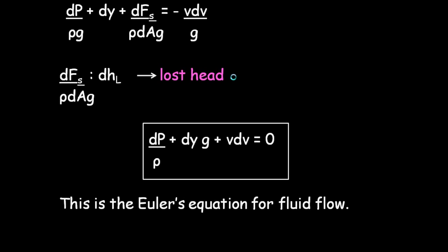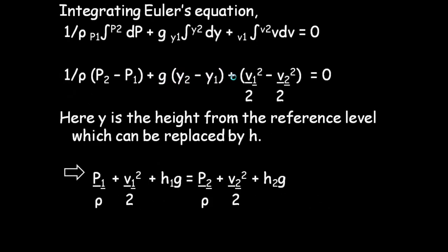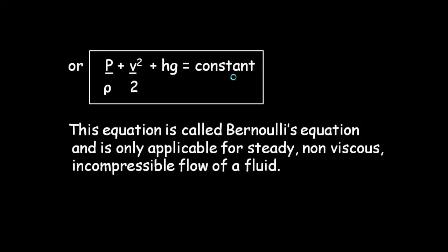On integrating this Euler's equation, we get Bernoulli's equation. In the meanwhile, y is the height from the reference level which can be replaced by h, which gives us P₁/ρ + v₁²/2 + h₁g = P₂/ρ + v₂²/2 + h₂g, or P/ρ + v²/2 + hg equals a constant. This equation is called Bernoulli's equation and is only applicable for steady, non-viscous, and incompressible flow of a fluid.